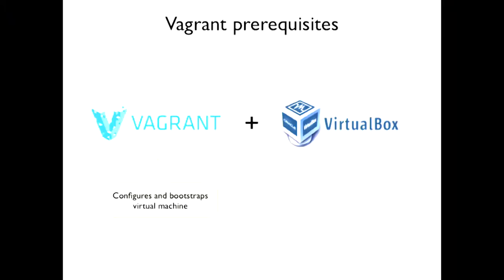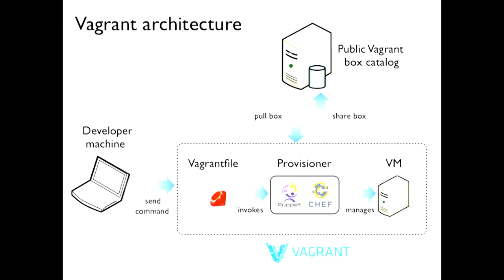Let's have a look at Vagrant and what you need to get running. First, you install the Vagrant runtime — you can simply download it. It provides the virtual machine configuration and bootstraps your virtual machine. By default it provides one provider: VirtualBox. That's the default, but you can change the provider at any time — you can use AWS or VMware Fusion. Once you have that, you can bring up a virtual machine with a specific configuration. Here's a brief overview of the architecture Vagrant provides.